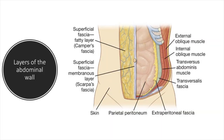Hello everyone. In this video we're going to talk about the many layers that make up the abdominal wall. As we talked about in our previous video introducing the surface anatomy of the abdomen, the abdominal wall protects the many visceral organs inside the abdomen. Let's pretend you're in the operating room or in anatomy lab and about to do an exploratory laparotomy. To get into the abdominal cavity you have to go through many layers of skin, fascia, and muscle.